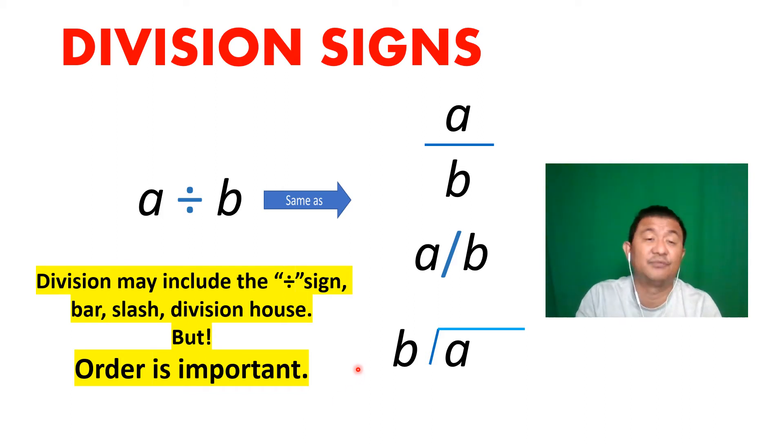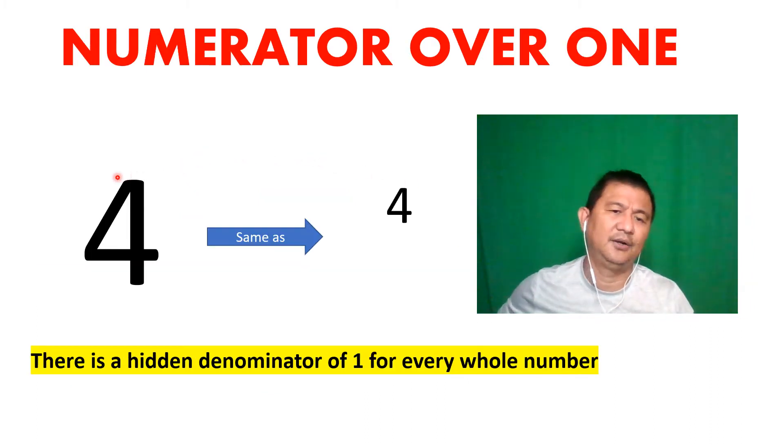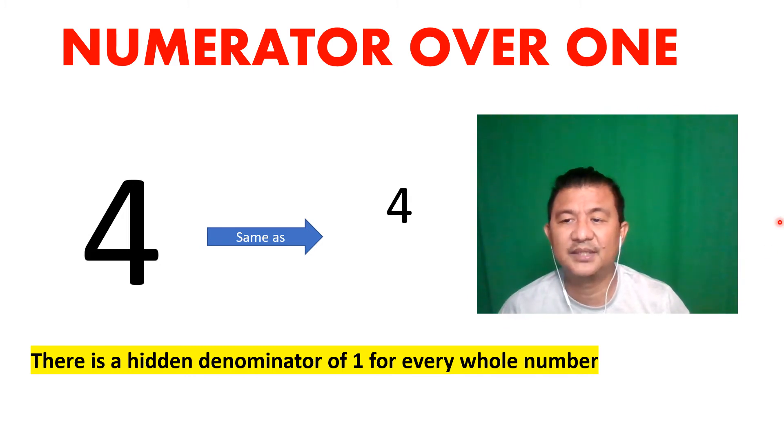Now look at this number four, a simple looking number four. But something is hiding there. Put a bar and over one, it is now a fraction. Any whole number, just put over one, it becomes a fraction.